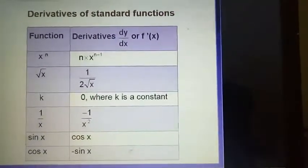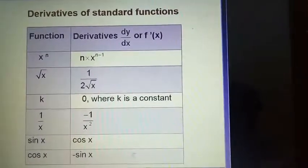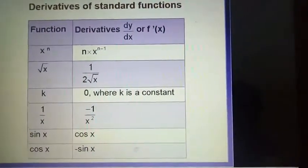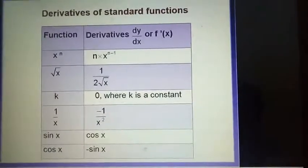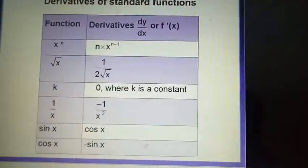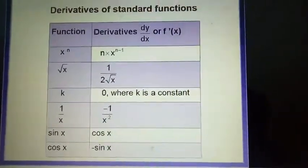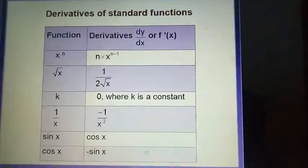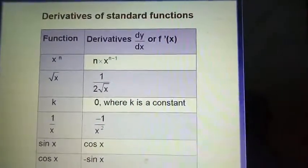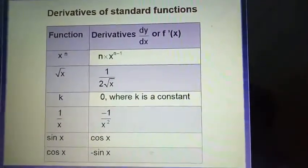Derivative of any constant is 0. Since derivative measures rate of change, and a constant does not change, its derivative is obviously 0. What is the derivative of 1 upon x? Some students say it is 1 because the derivative of x is 1 — that is not correct. You must bring 1 upon x into standard form x raised to n. Since 1 upon x is x raised to minus 1, its derivative is minus 1 into x raised to minus 2, that is minus 1 upon x square.